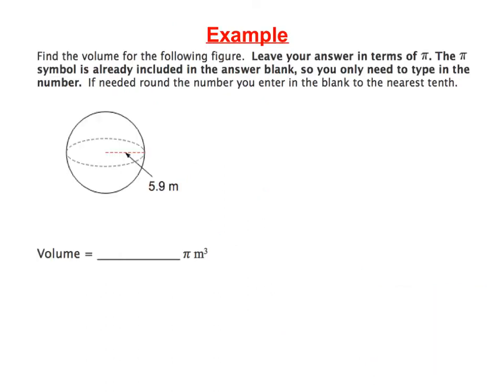Here is one final example. We're going to find the volume of this sphere. And notice that the 5.9 is already the radius. It goes from the center of the circle to the outer edge of the sphere. So we have everything we need now.